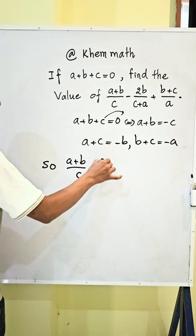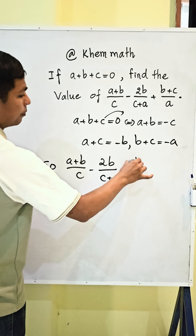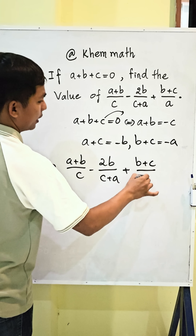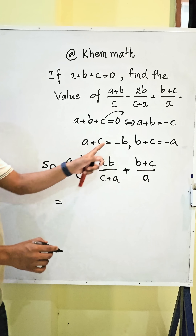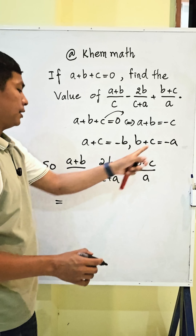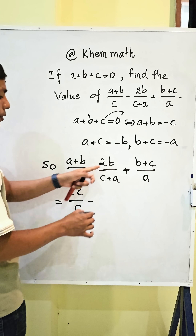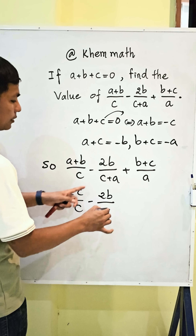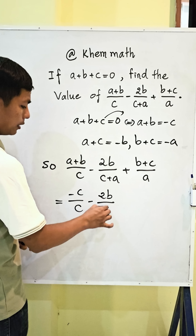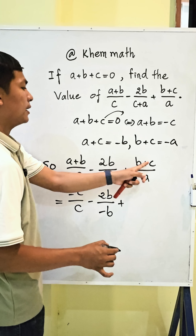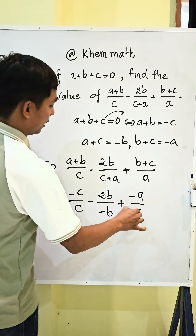We replace these in the expression: (a+b)/c minus 2b/(c+a) plus (b+c)/a. Here a plus b equals negative c, so we get negative c divided by c. Then c plus a equals negative b, and b plus c equals negative a, giving us negative a divided by a.